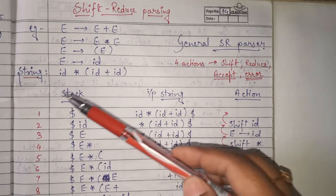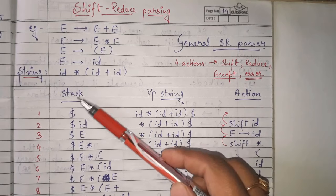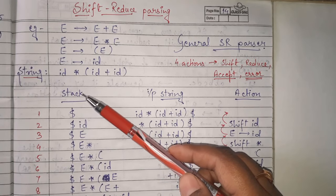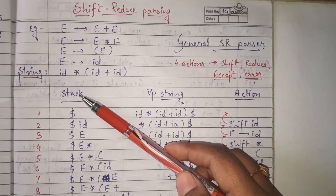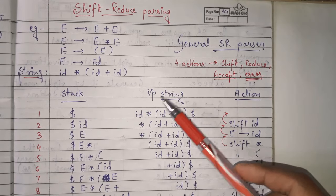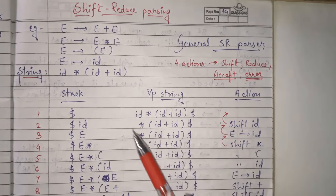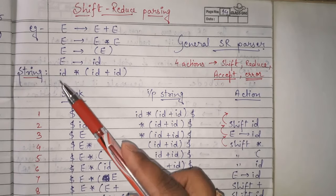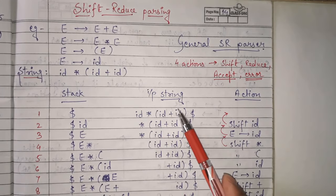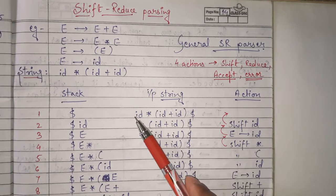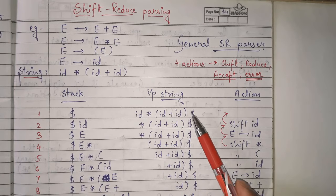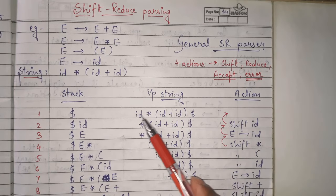In the stack, how do we start? By default, one dollar will be there initially — there is nothing else in the stack, so we write only dollar. In the input string, initially I write the whole string given to us, that is id star id plus id. I write it whole, and then we append one dollar at the end of the input string.